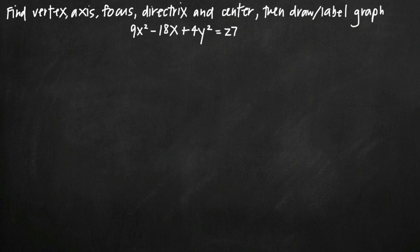Today we're going to be talking about how to find the vertex, axis, focus, directrix, and center of an ellipse and then draw and label the graph of the ellipse. In this particular problem we've been given the equation 9x squared minus 18x plus 4y squared equals 27.